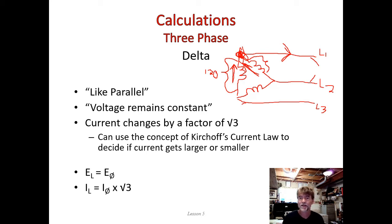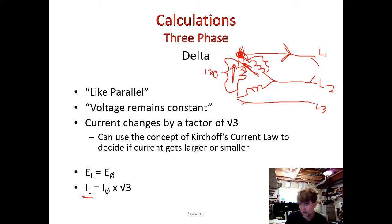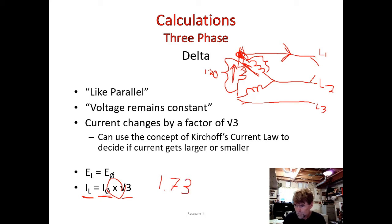We can't simply add the two phase currents together because they're out of phase by 120 degrees. Because of that, the line current is greater but it's not simply double — it's greater by a factor of root 3. The equation is: I line equals I phase multiplied by root 3. Root 3 is approximately 1.73, so we take the phase current and multiply by 1.73 to get a bigger number, but less than double.